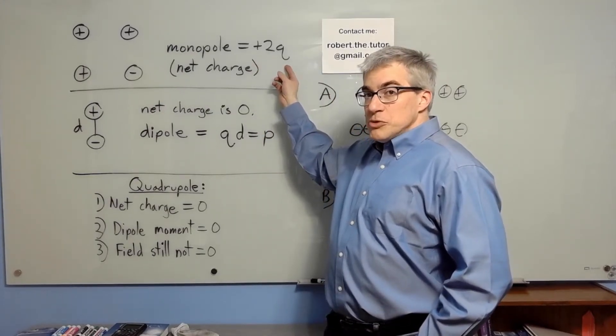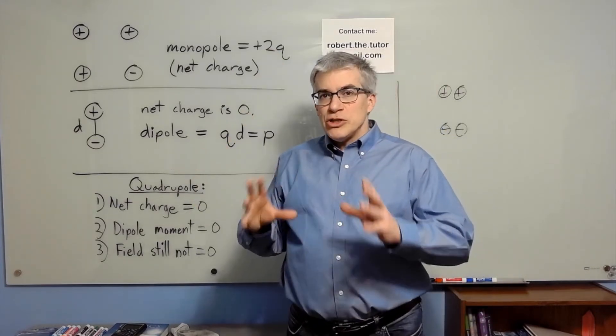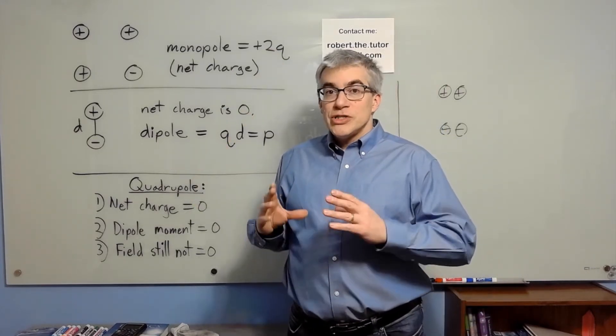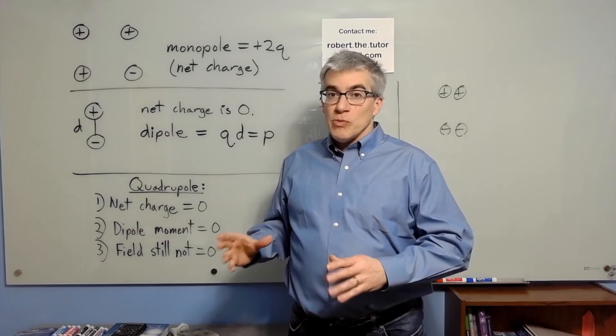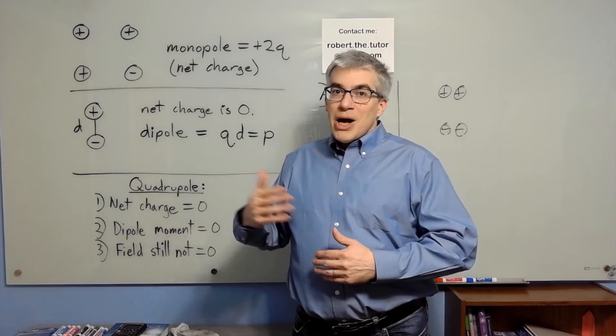The next step: you could have an arrangement of charges where the total charge is zero. It has no monopole moment, but it still has a dipole moment, so it has a positive side to it and a negative side to it.